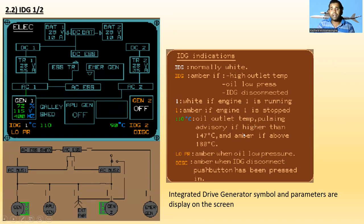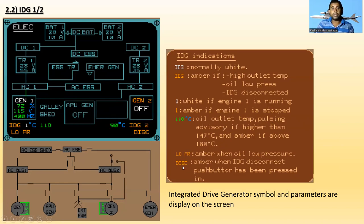The oil outlet temperature pulses amber if higher than 147 degrees Celsius and is steady amber if above 180 degrees Celsius. Low pressure becomes amber when oil pressure is low. The disk indication becomes amber when the IDG is disconnected — when the disconnect push button has been pressed.